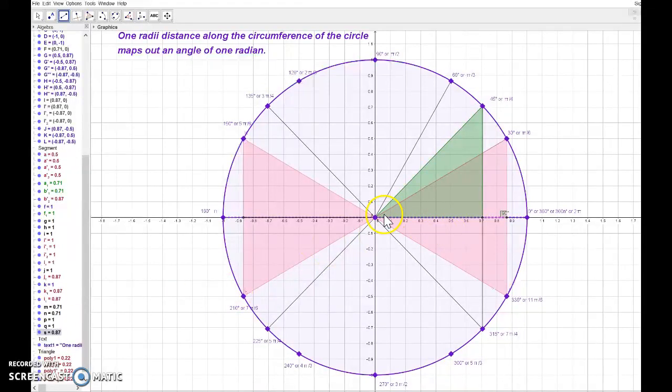So in exact values, we're now looking for coordinates, the x value and the y value, the x coordinate and the y coordinate, based on the distances of these known triangles. We're going to be able to give those values for the 30s, the 45s, the 60s.